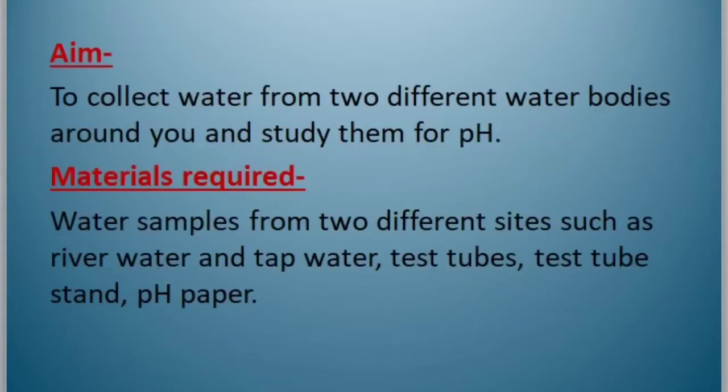Aim: to collect water from two different water bodies around you and study them for pH. Materials required: water samples from two different sites such as river water and tap water, test tubes, test tube stand, and pH paper. We can also use the universal indicator.